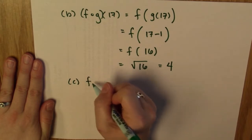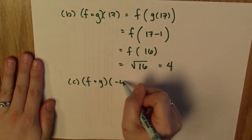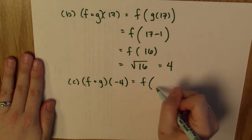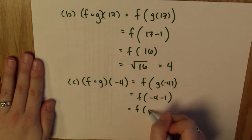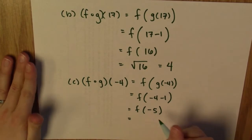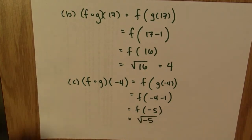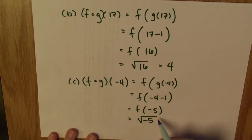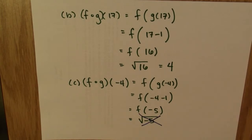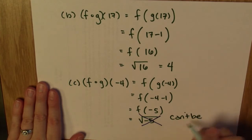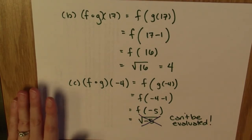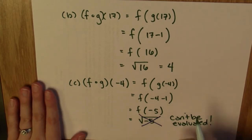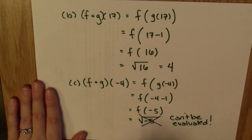The last part is to find f composed with g of negative 4. Using the same process, this is f of negative 4 minus 1, which is f of negative 5. What f does is take the square root of the input, so this is the square root of negative 5. We can't take the square root of a negative number, so f composed with g of negative 4 can't be evaluated. In other words, negative 4 is not in the domain of f composed with g. It's in the domain of g, but not in the domain of the composition, because once I evaluate g of negative 4, I cannot plug that result into f.